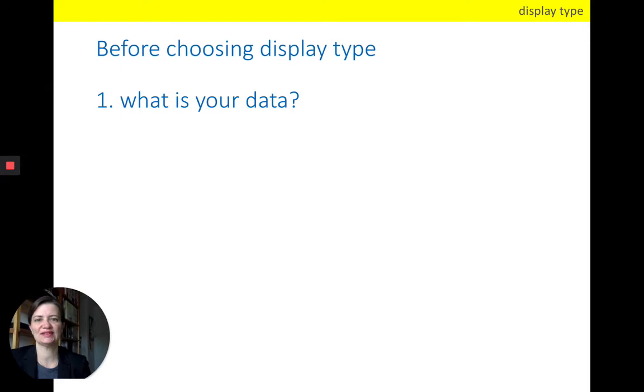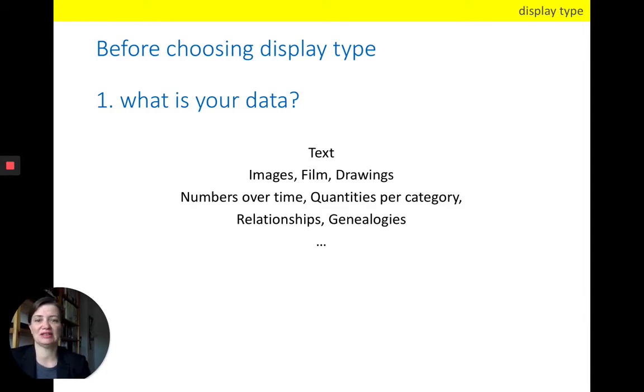So before choosing the display type, you need to know what is your data. So let's go through a couple of different data types to familiarize yourself with this. First of all, your data could be text that is usually shown in tables. Your data could also be images or films or drawings. For that we will have a separate lecture on discussing them. In 99% of the cases, probably if you are a scientist, your data actually are numbers. Numbers that you observed over time where you observed quantities per category, where you observed relationships, genealogies or whatnot.